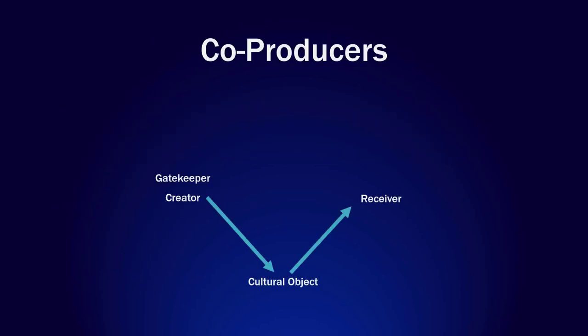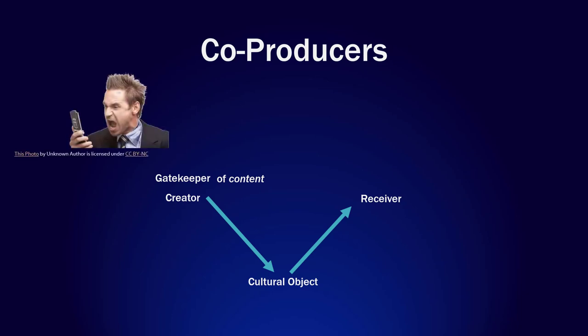In their capacity as co-producers or co-creators, the cultural gatekeeper may essentially sit on or with the creator, influencing the relationship between the creator and receiver through limiting the content of the cultural object that creators create. In this way, the content of the cultural object that the receiver experiences has already been shaped and constrained in ways that involve more than just the creator themselves. For instance, film producers who hold the purse strings to a film's creation may force a film director to change, add, or remove things in the film that they dislike.